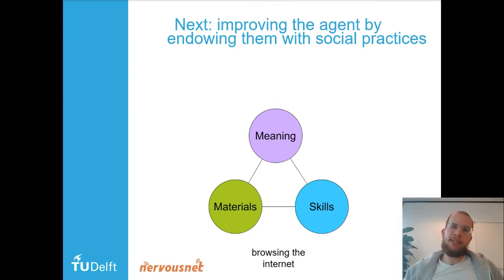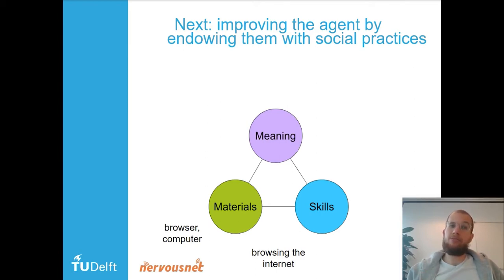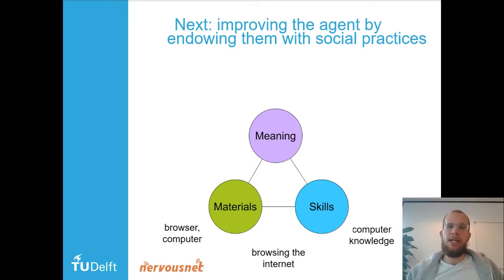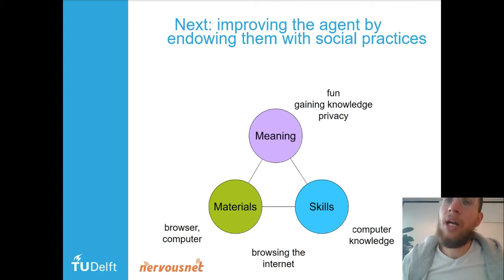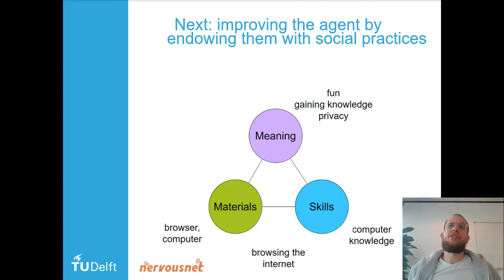It says that these practices consist of three things: meaning, skills, and materials. For example, for browsing the internet, materials like a browser or a computer are relevant, the skill of computer knowledge is relevant, and it has a certain meaning — it can be fun or about gaining knowledge.